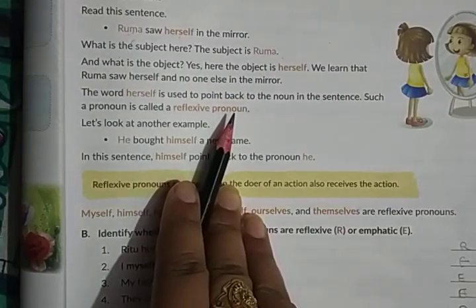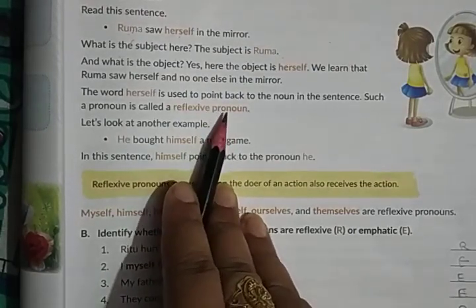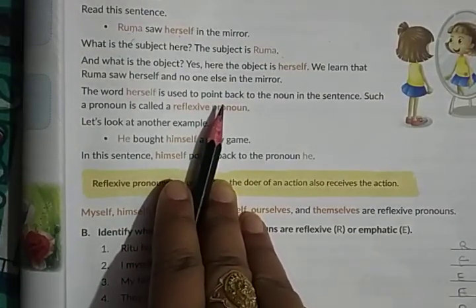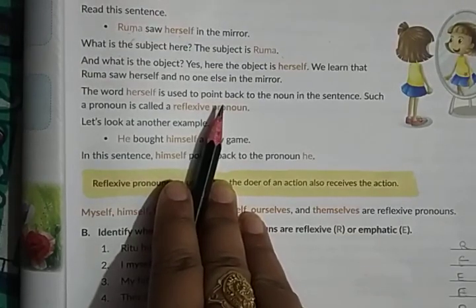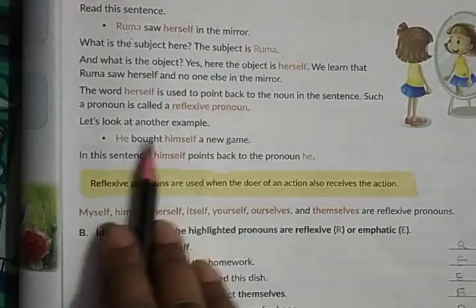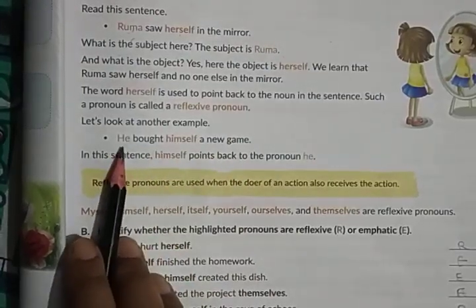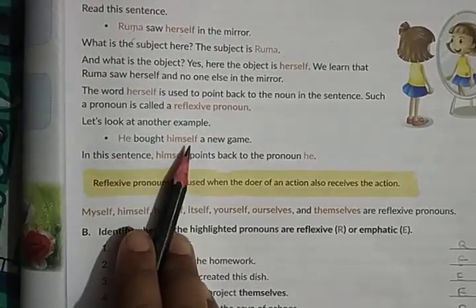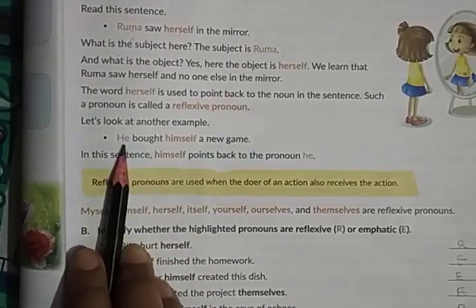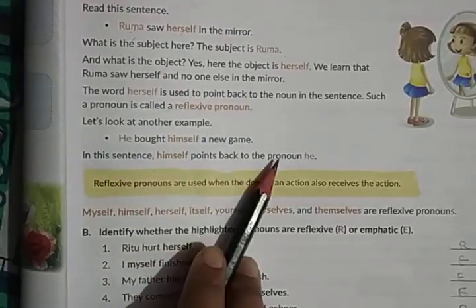When the pronoun is used to point back to the noun in the sentence, it is known as reflexive pronoun — it turns back to the noun. Another example: 'He bought himself a new game.' Here 'himself' is turning back to 'he,' so 'himself' is a reflexive pronoun because himself points back to the pronoun he. In reflexive pronouns, the doer of the action also receives the action.